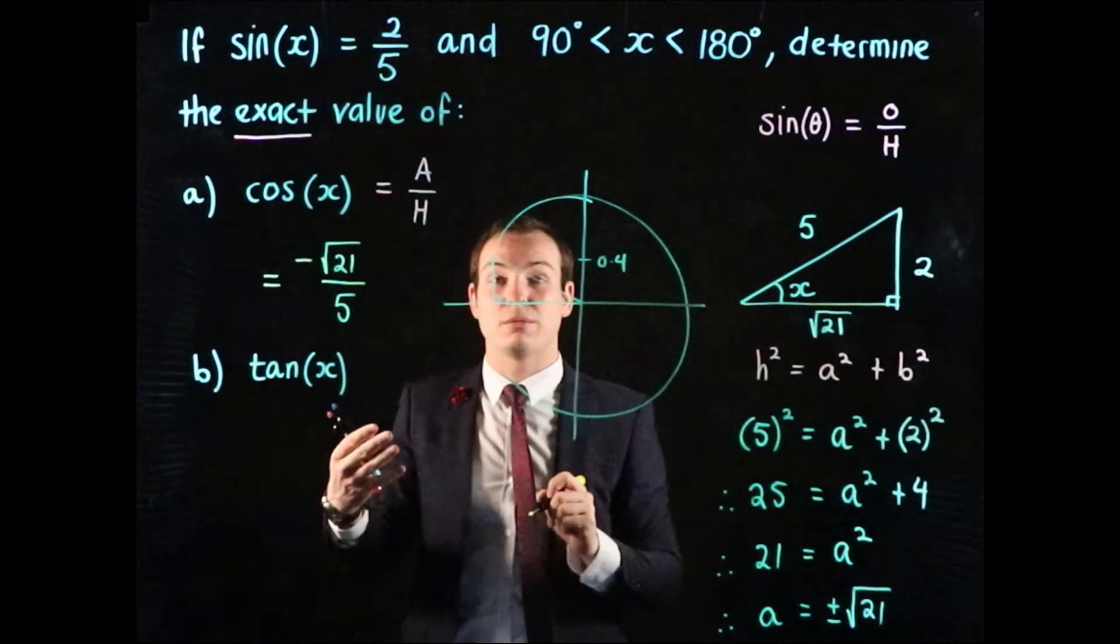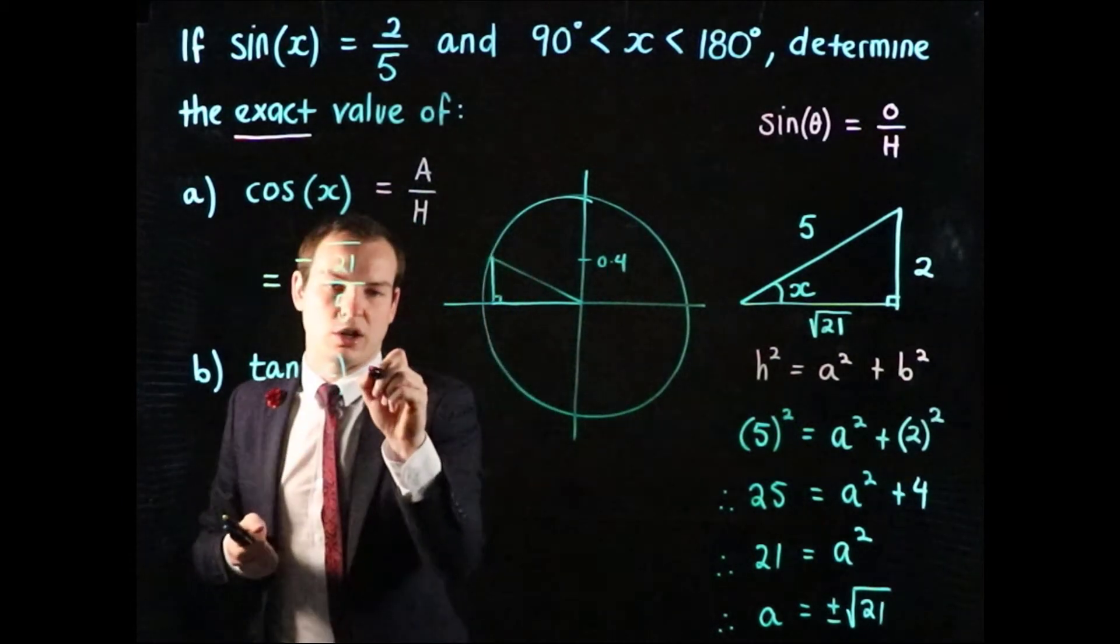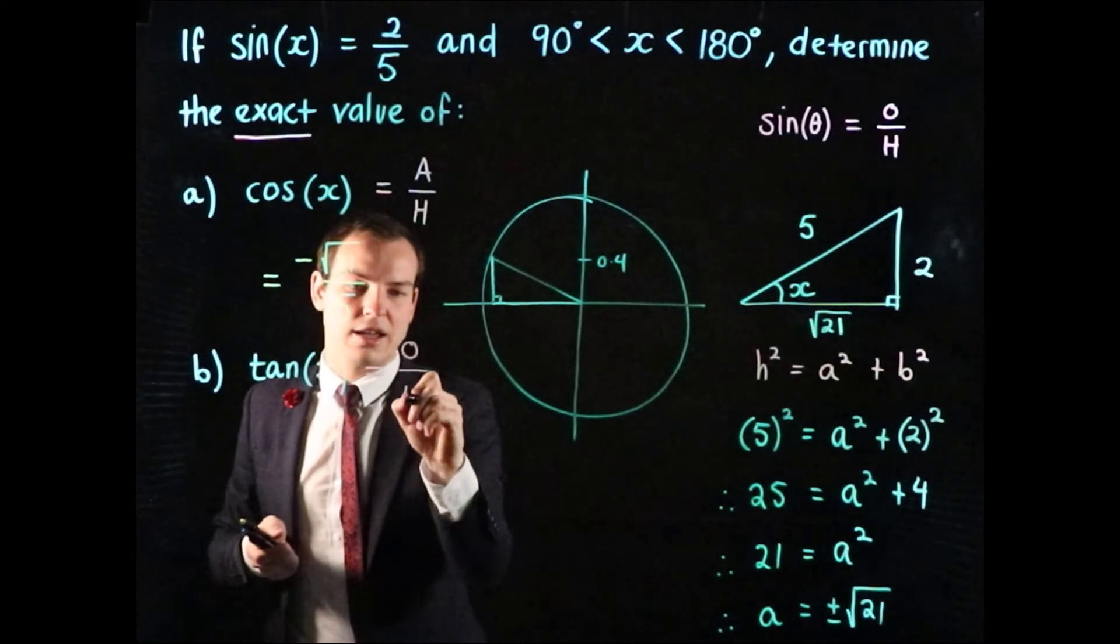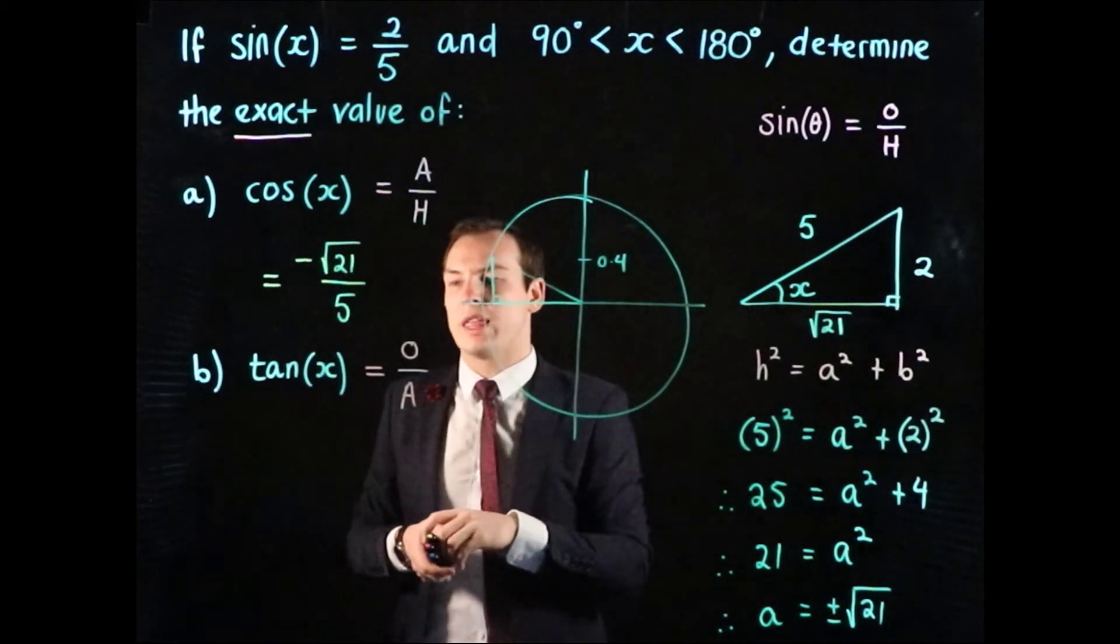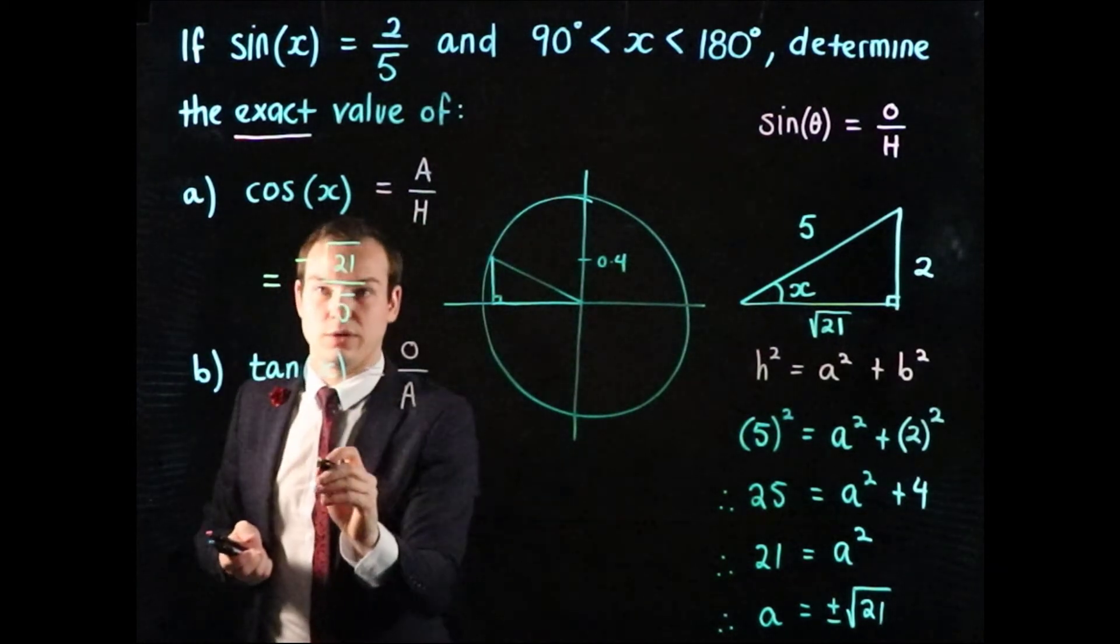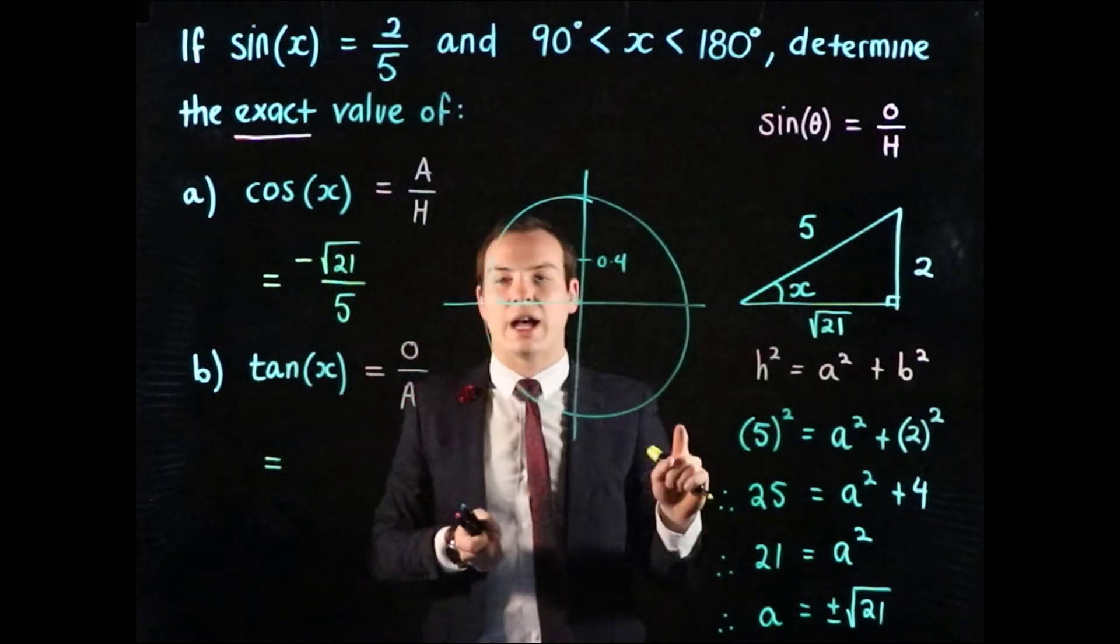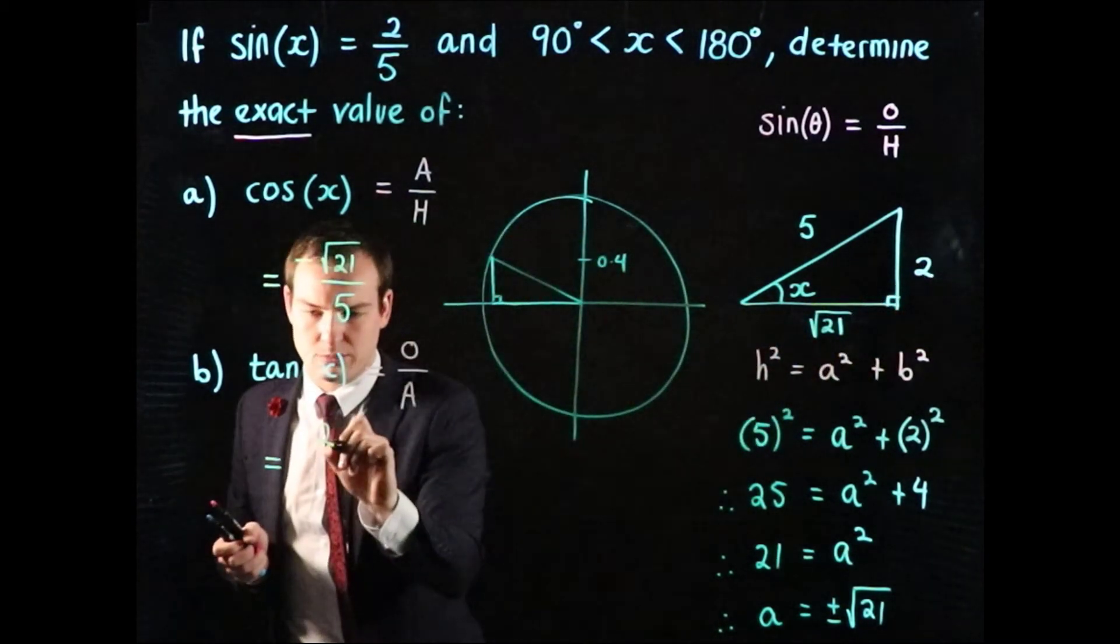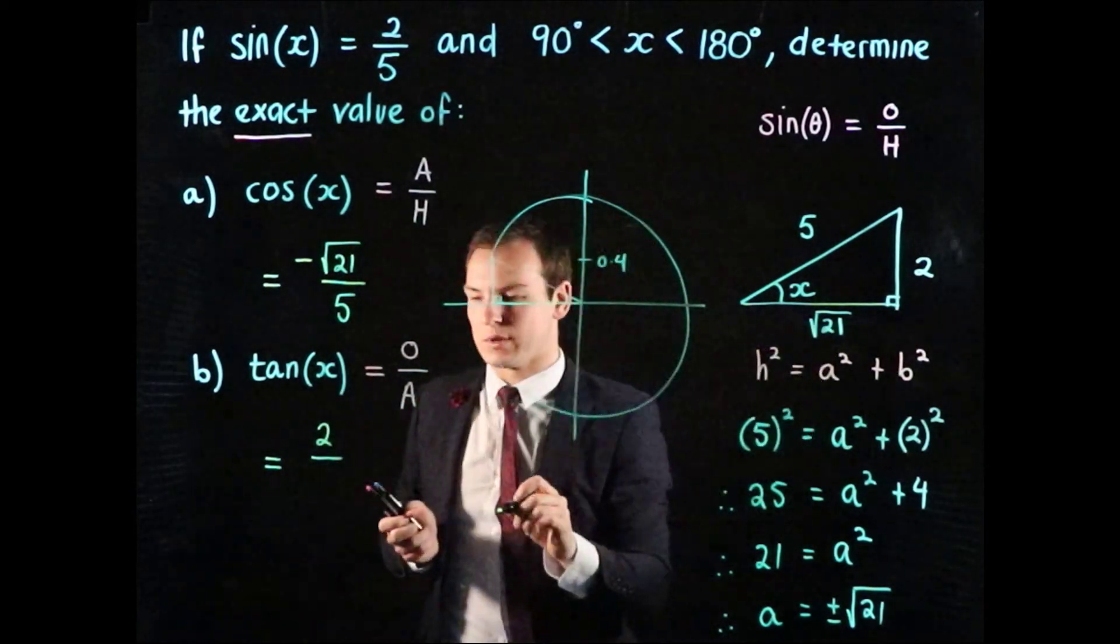For part b, we're going to be really close to finding out what that is because we know that tan's ratio is going to equal O over A, or the opposite over the adjacent. So the tan value for this question, tan of x, equals the opposite on this triangle which is 2, divided by the adjacent which is the square root of 21.